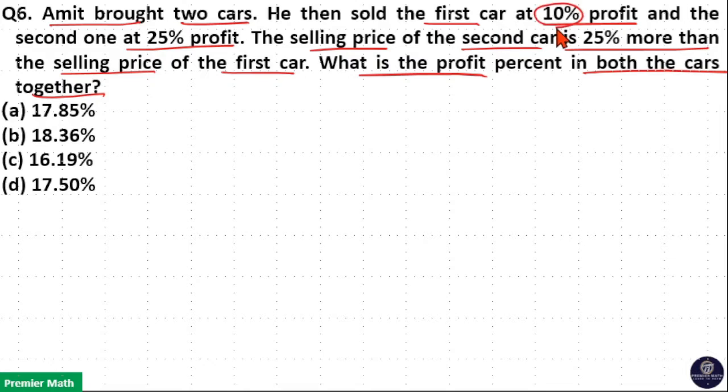Here Amit sold the first car at 10 percentage profit means plus 10 percentage means 10 by 100, plus 1 by 10. If 10 part is the cost price then 11 part is the sell price. Take the ratio that is 10 is to 11 is the cost price and sell price ratio.